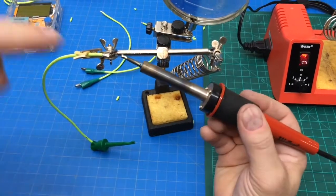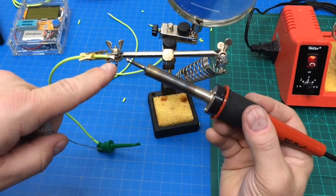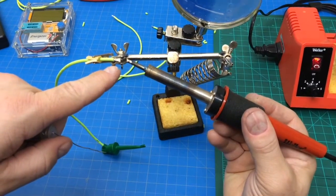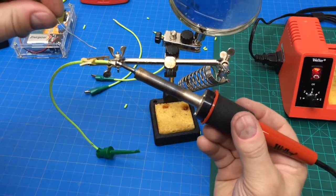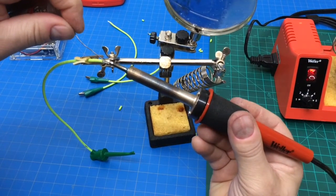Okay, one thing that we found out is it was easier if we strip these a little bit long, flatten them, tin them, and then trim it down afterwards. They were becoming too thick the other way.